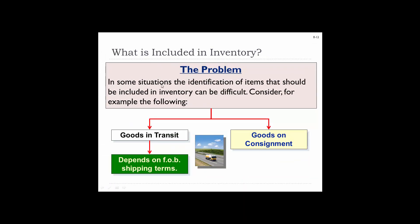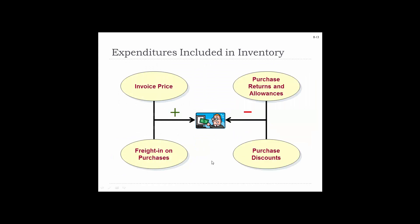What's included in inventory? In some situations, the identification of items that should be included in inventory can be difficult. Consider the following: 1. Goods in transit — is it our inventory or the seller's? It depends on freight on board shipping terms. 2. Consignment goods — these are goods we're holding for someone else, only collecting a commission, so they shouldn't be part of our inventory. 3. What expenditures are included in the cost of inventory? We include the invoice price, freight-in on purchases, and subtract returns, allowances, and purchase discounts.